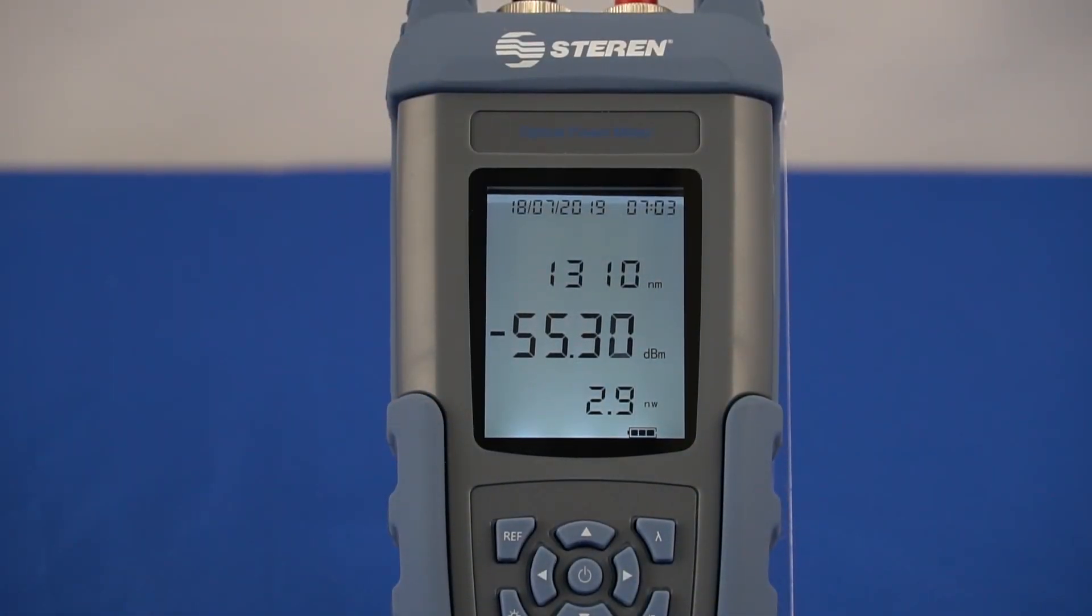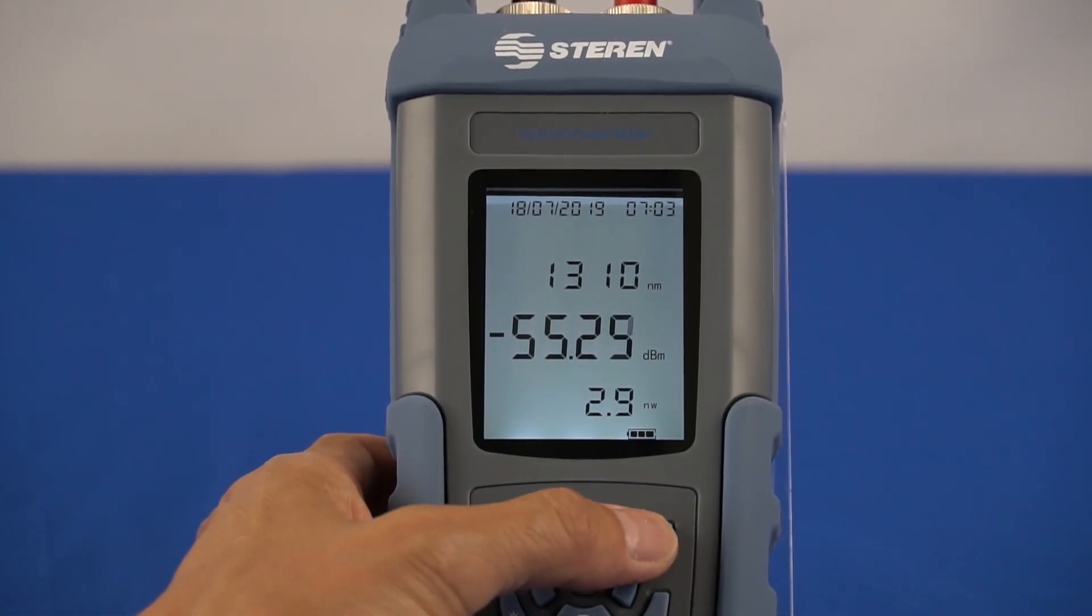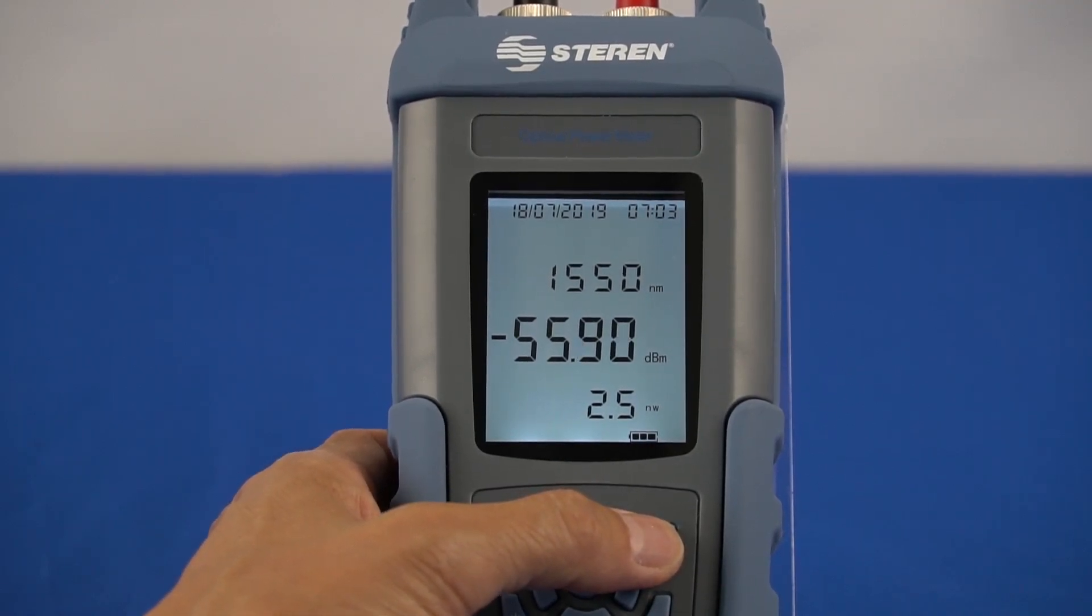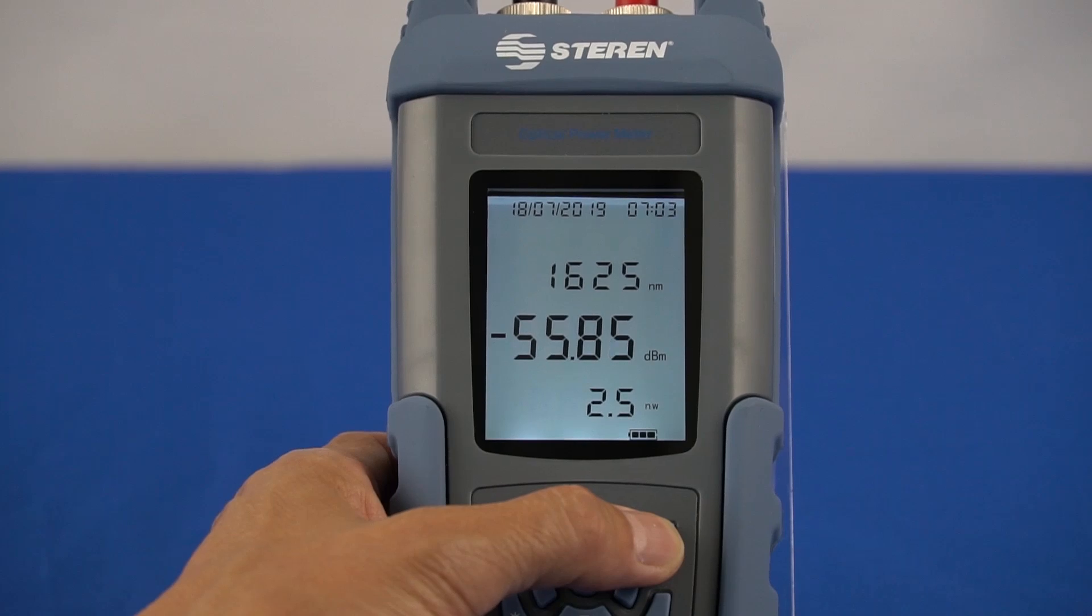This optical power meter has six pre-calibrated common wavelengths: 1310 nanometer, 1490 nanometer, 1550 nanometer, 1625 nanometer, 850 nanometer, and 1300 nanometer.